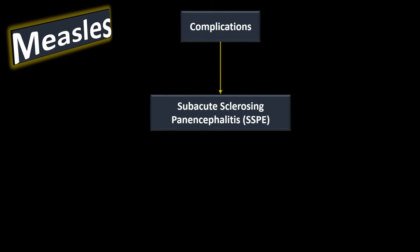One more complication is subacute sclerosing panencephalitis, or SSPE — a chronic, progressive brain inflammation caused by persistent measles virus infection. It usually occurs when infants are infected with measles. It appears the patient has recovered, but the virus lies dormant and may mutate, then reactivates years after the primary infection causing severe inflammation of the entire brain. This condition is fatal and progressively worsens.